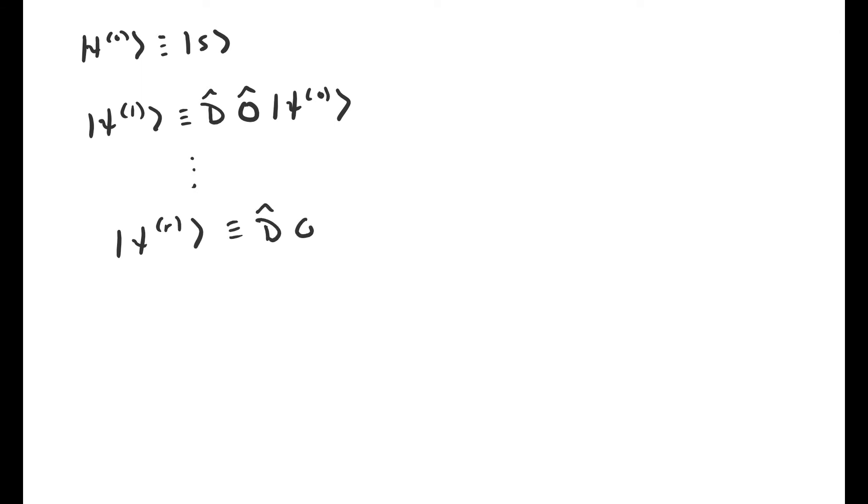And this is all Grover's algorithm consists of. We apply the subroutine some number of times such that the resulting state is close enough to the special state x star that if we make a measurement, we have a reasonably high probability of measuring the system to be in the state x star.